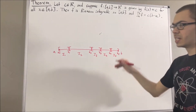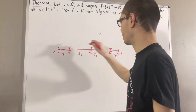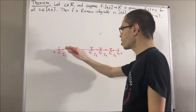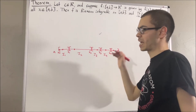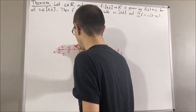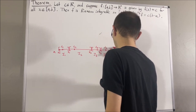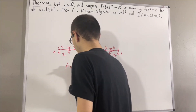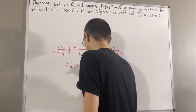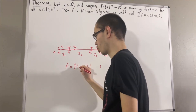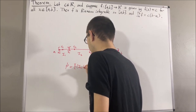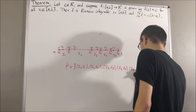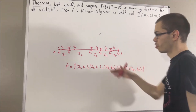A tagged partition is when we select a point from each of these subintervals. The points we select are called tags, and we might label them t₁, t₂, and so on. We symbolize a tagged partition with a letter with a dot on top, and it's a collection of ordered pairs where the first coordinate is the subinterval and the second coordinate is the tag in that subinterval.